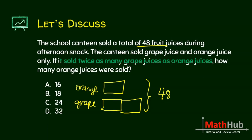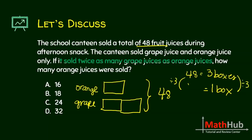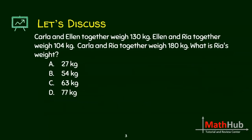Our goal in solving word problems using models is to find the number inside the box. It says here that 48 is for three boxes, so one box is equivalent to 48 divided by 3, which is 16. The question asks how many orange juices were sold, so the answer is 16. But if the question was how many grape juices were sold, the answer is 32. Always go back to the question and make sure you are selecting the correct answer.